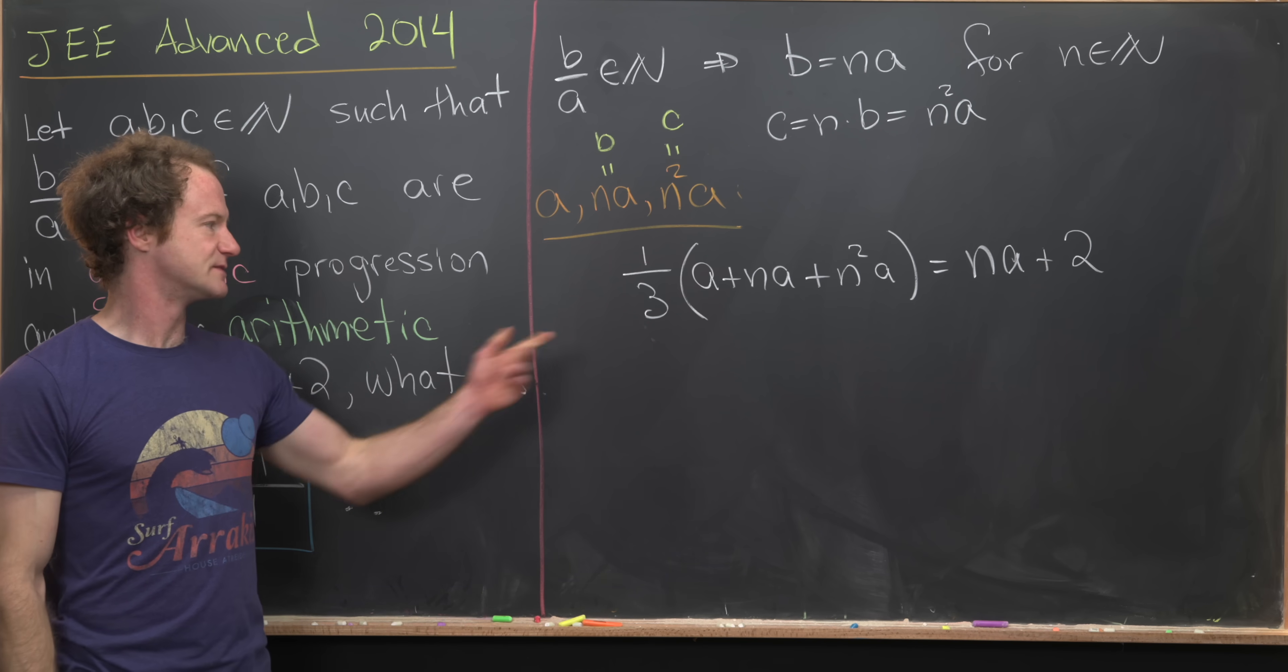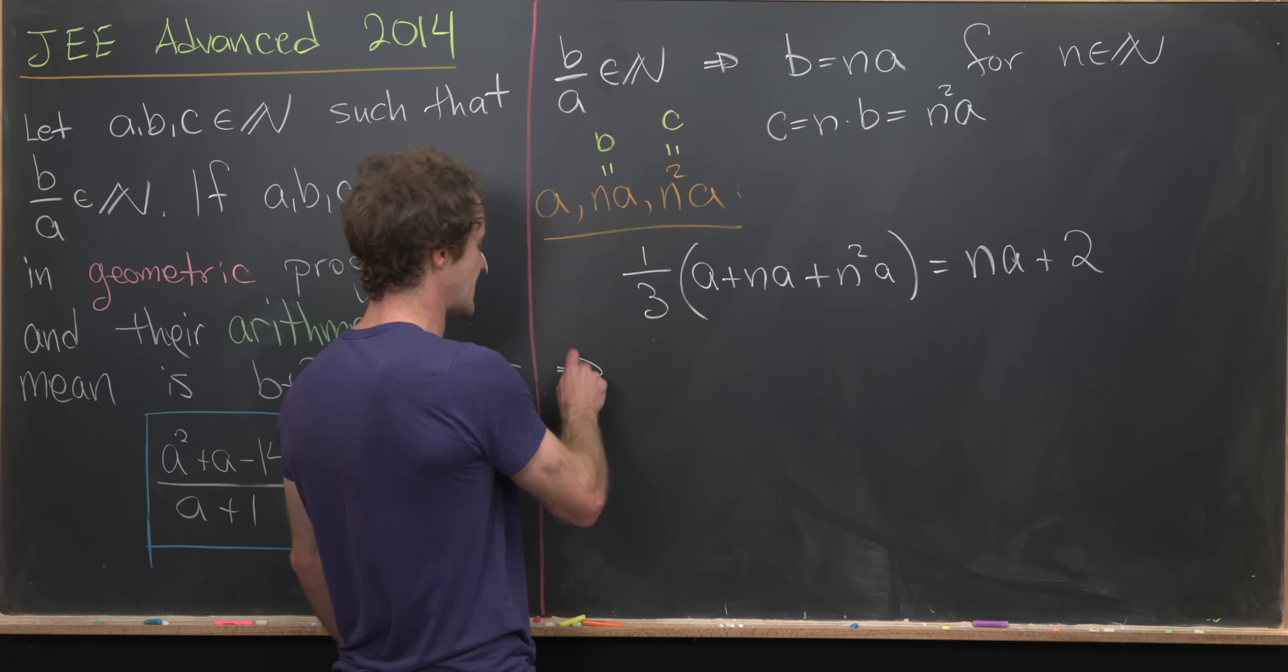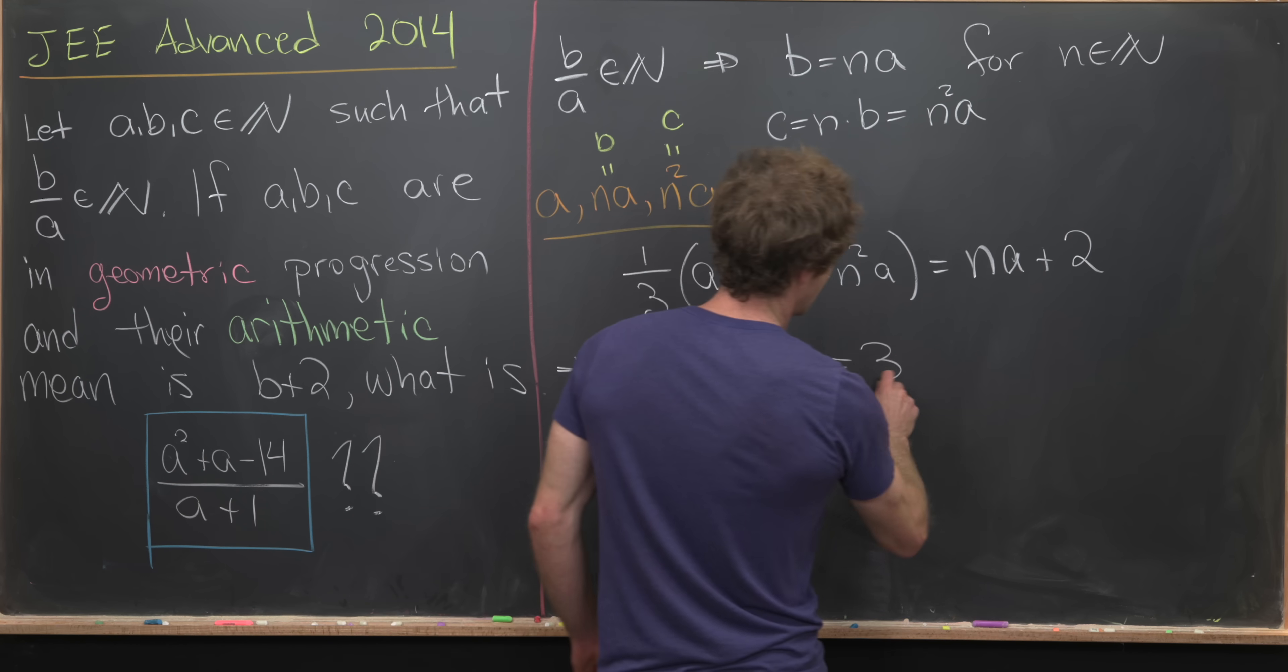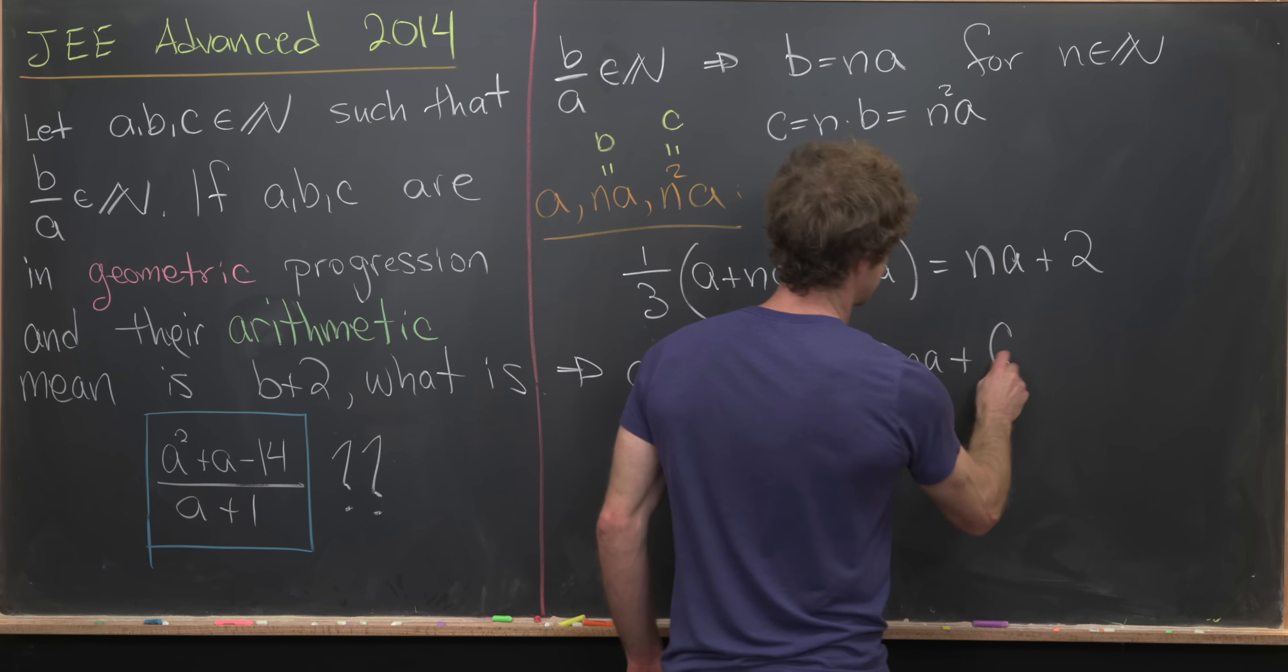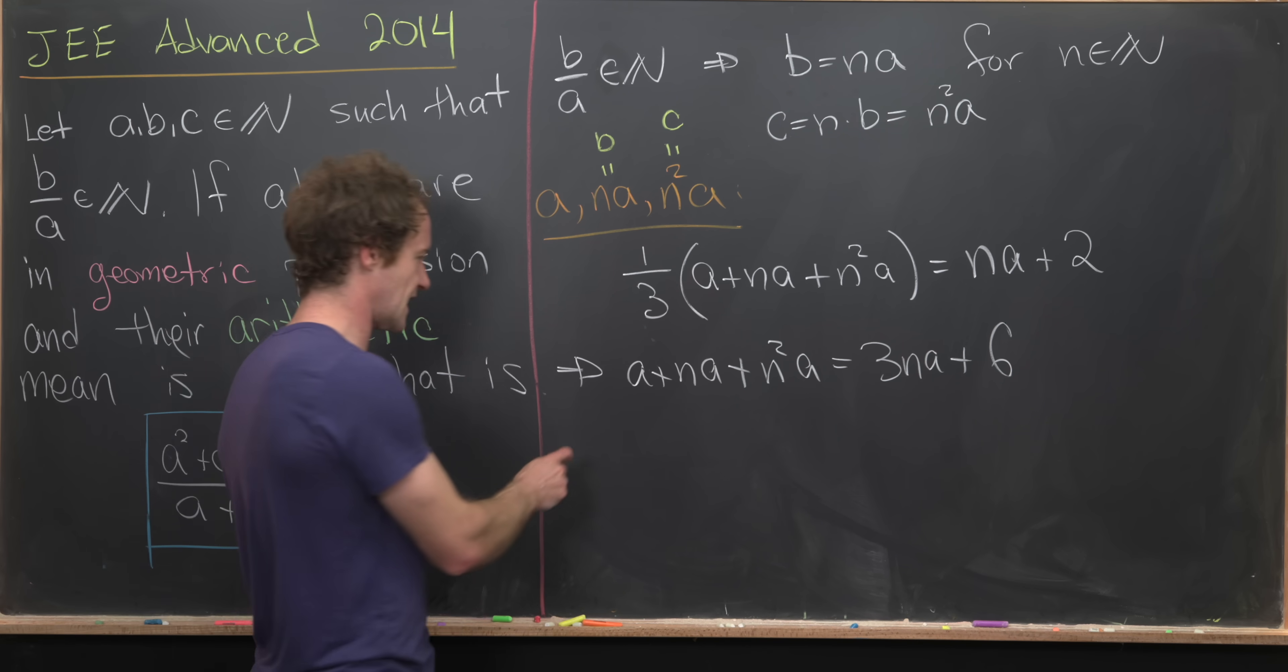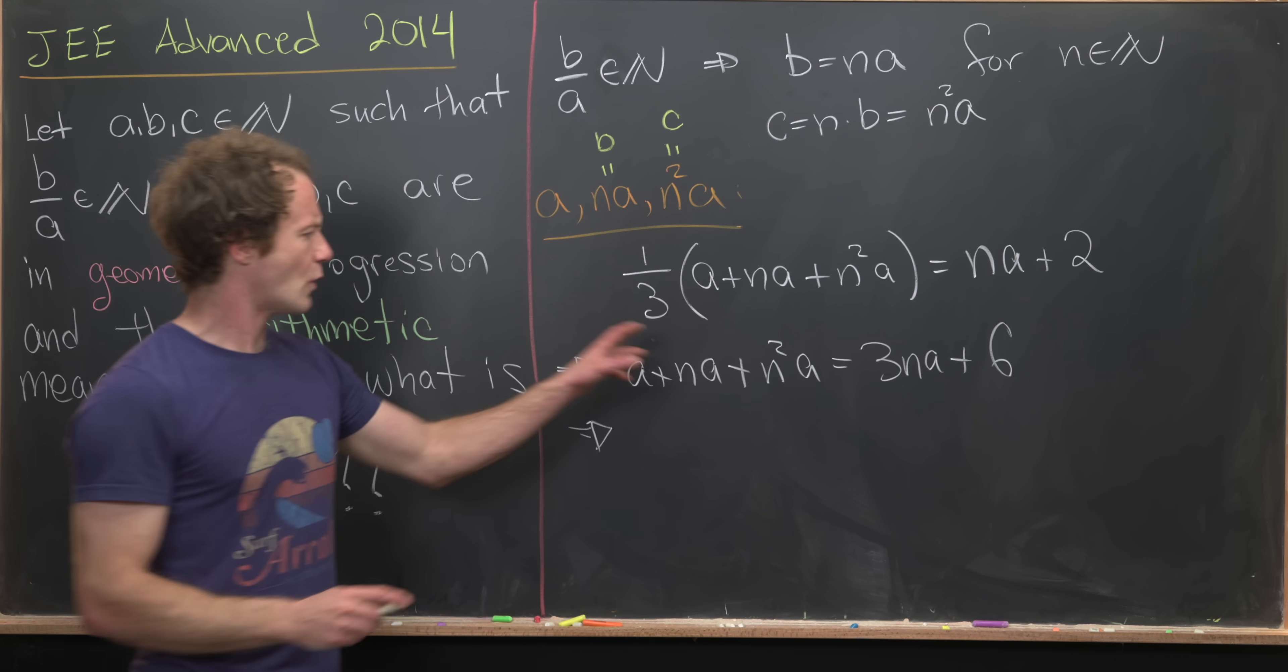Maybe what I would like to do is multiply both sides by 3. And notice that will give us A plus N times A plus N squared times A equals 3NA plus 6. Now we can maybe move this 3NA to the other side of the equation and then reorder this a little bit while factoring an A out.